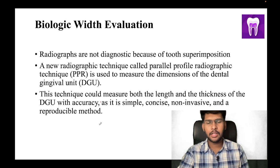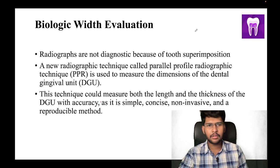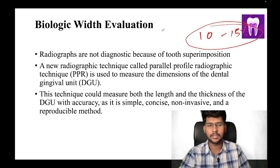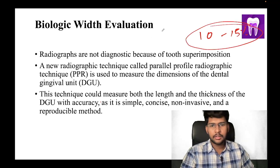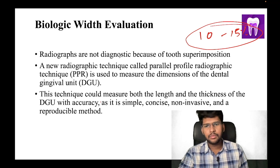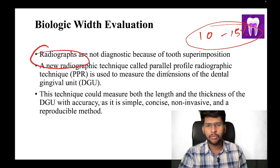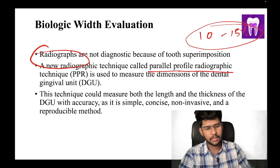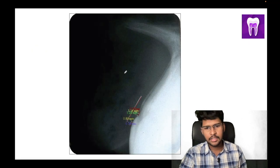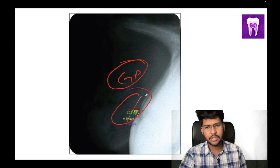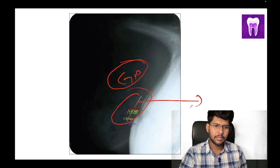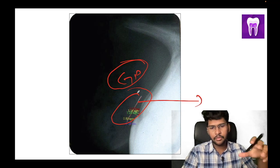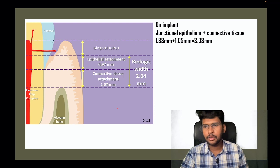How do we evaluate biologic width? On a normal x-ray there will be at least 10 to 15 percent elongation or reduction in tooth structure size due to radiographic distortion, so we cannot rely on radiographs alone. Instead, there is a method called the parallel profile radiographic technique, where gutta percha is placed into the sulcus so you can relate the tooth structure size to the known size of the gutta percha.